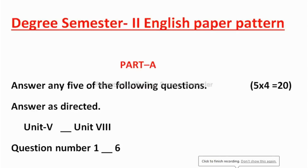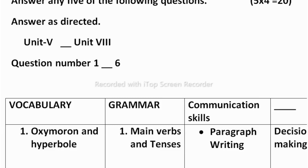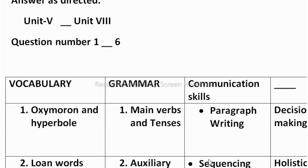You have only 4 units — Unit 5 to Unit 8 — for the second semester. From these 4 units you will get 6 questions in Part A, and you have to do any 4 out of these. These are objective type questions covering vocabulary, grammar, and communication skills topics from Unit 1 to Unit 8. So let's see this first.